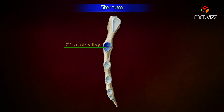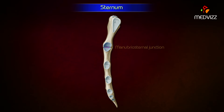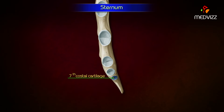Strictly speaking, the second costal cartilage articulates at the side of the manubriosternal junction, and the seventh costal cartilage articulates at the xiphosternal junction.